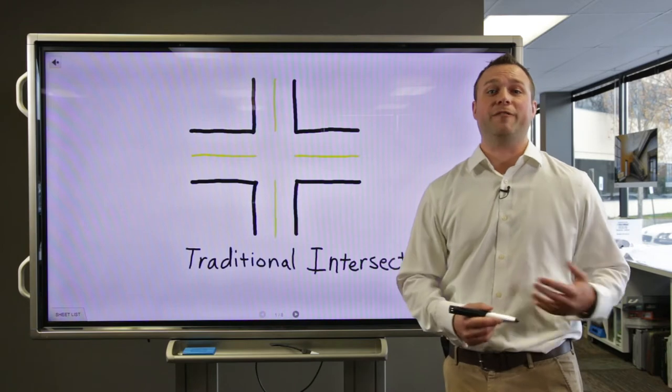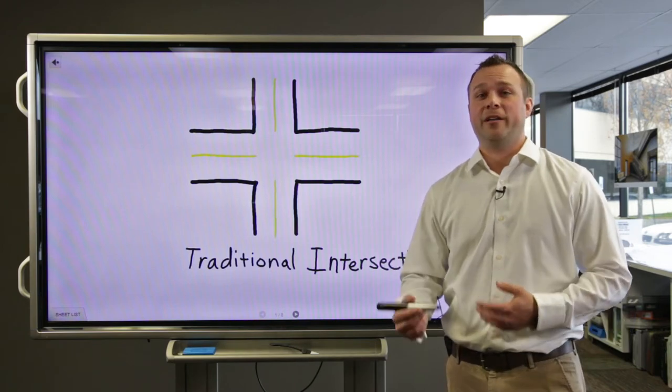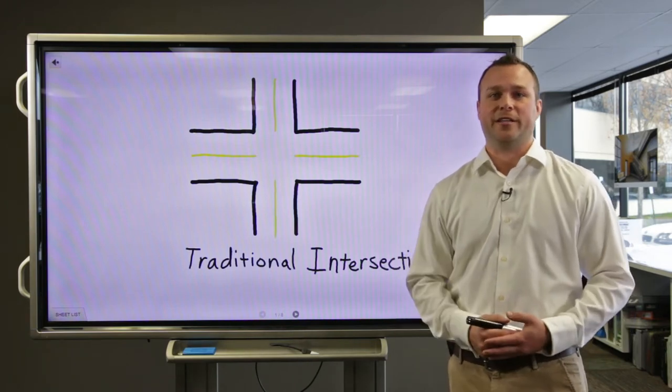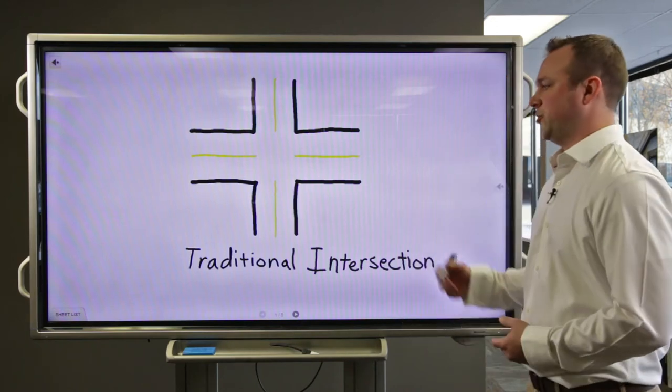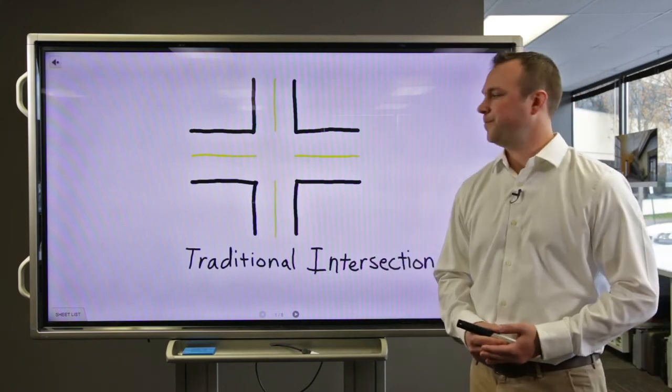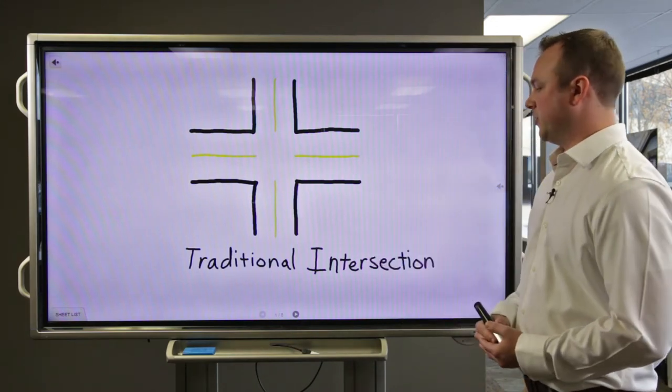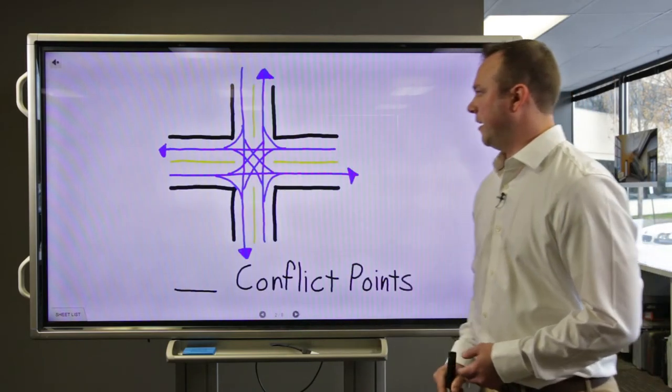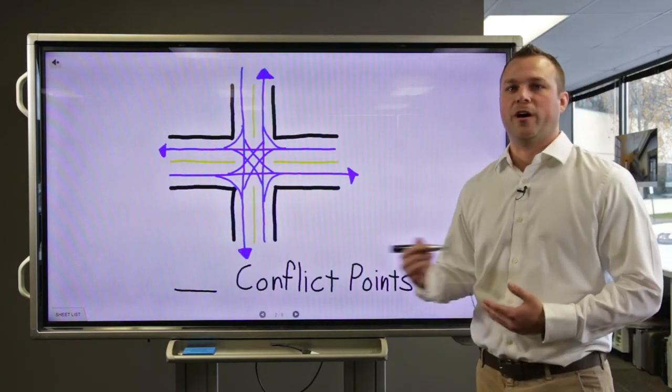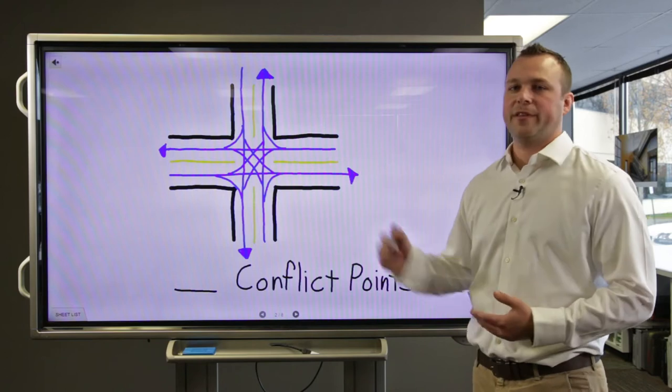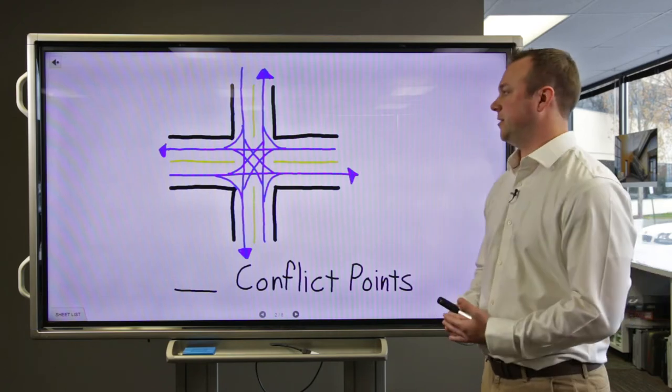Well today I'm going to talk about how reduced conflict points in a roundabout can help make it a safer intersection. So let's start out by looking at a traditional four-way stop or signal. With one lane in each direction, I have here a movement drawn for each movement that a vehicle can make through the intersection.